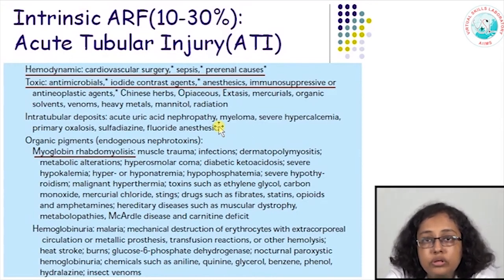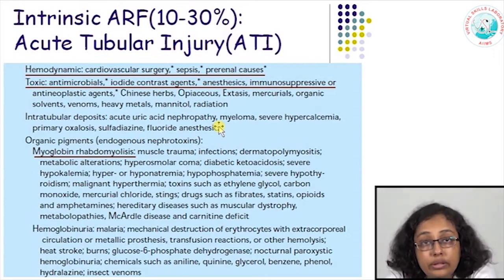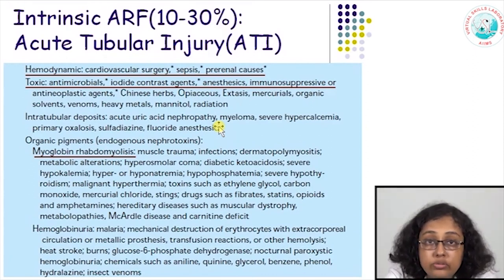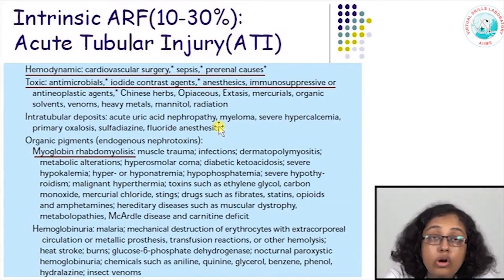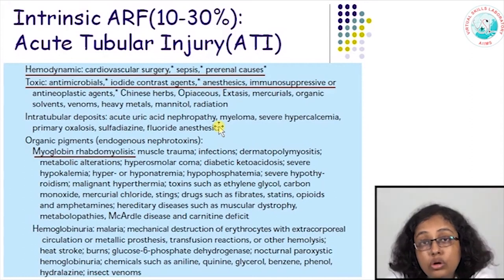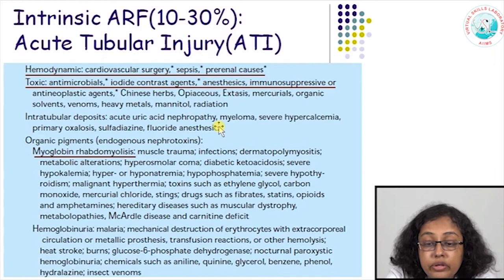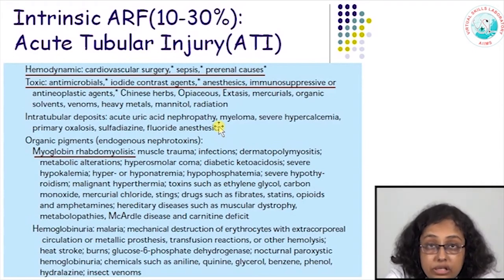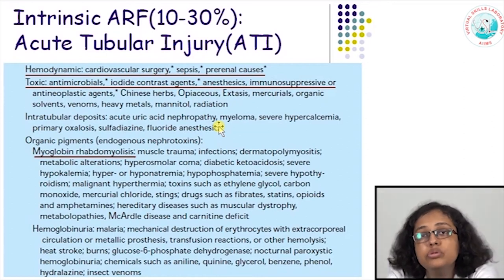This is known as ischemic acute tubular injury due to prolonged lack of renal perfusion. Many toxic factors cause nephrotoxic acute tubular injury — various antibiotics, radio contrast agents commonly used for CT scans and coronary angiographies, immunosuppressive drugs like cyclosporine, alternative medicines like Chinese herbs, heavy metals especially mercury, snake venoms, radiation injury, certain disease conditions producing excessive proteins like multiple myeloma, very high calcium levels, and high oxalate levels seen in primary oxalosis — all can be deposited in kidney tubules and lead to tubular injury.